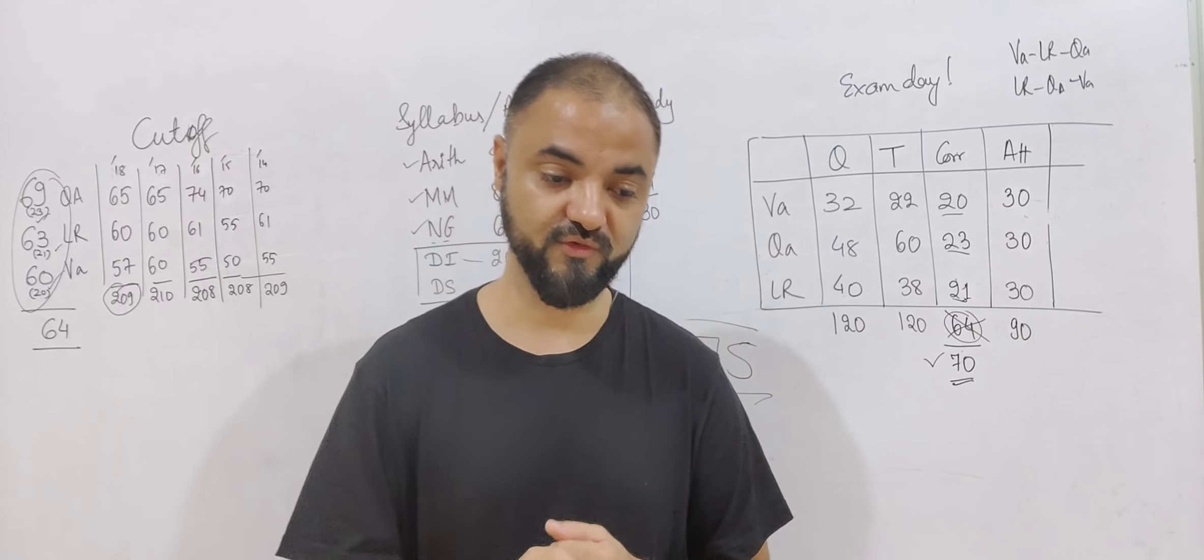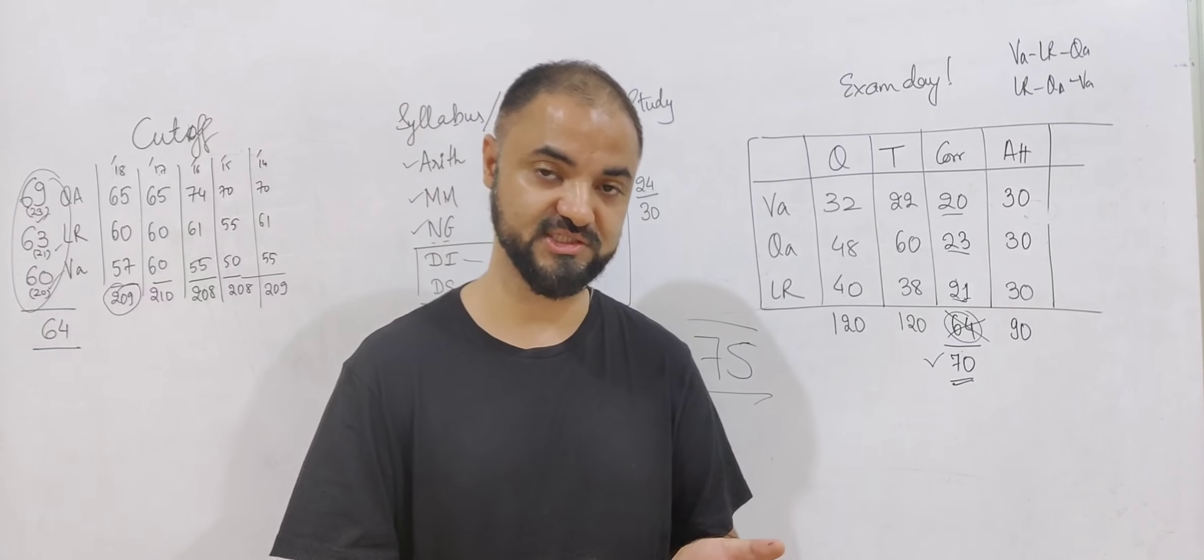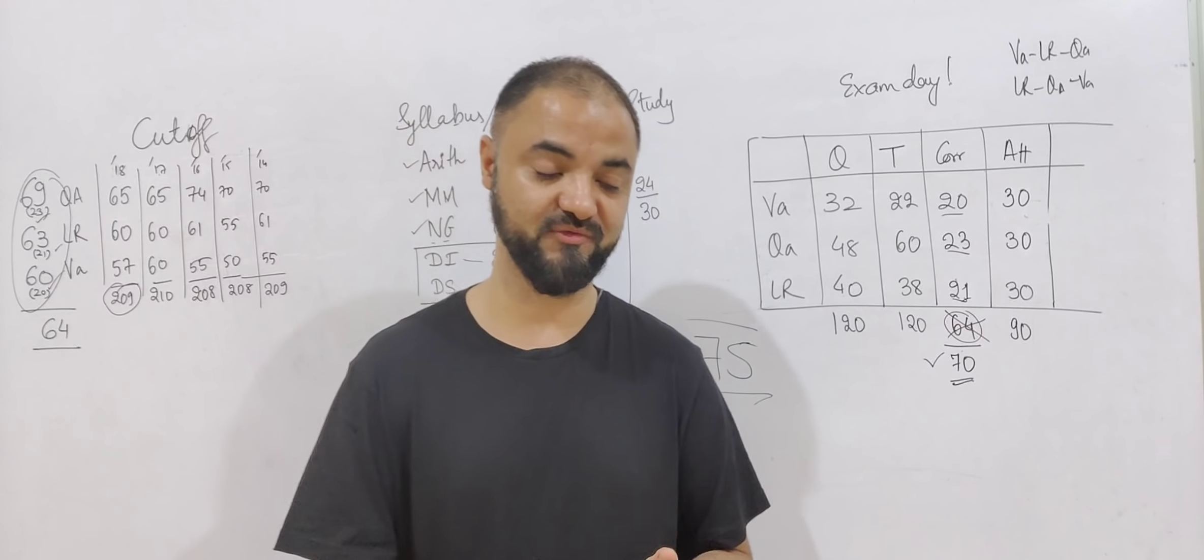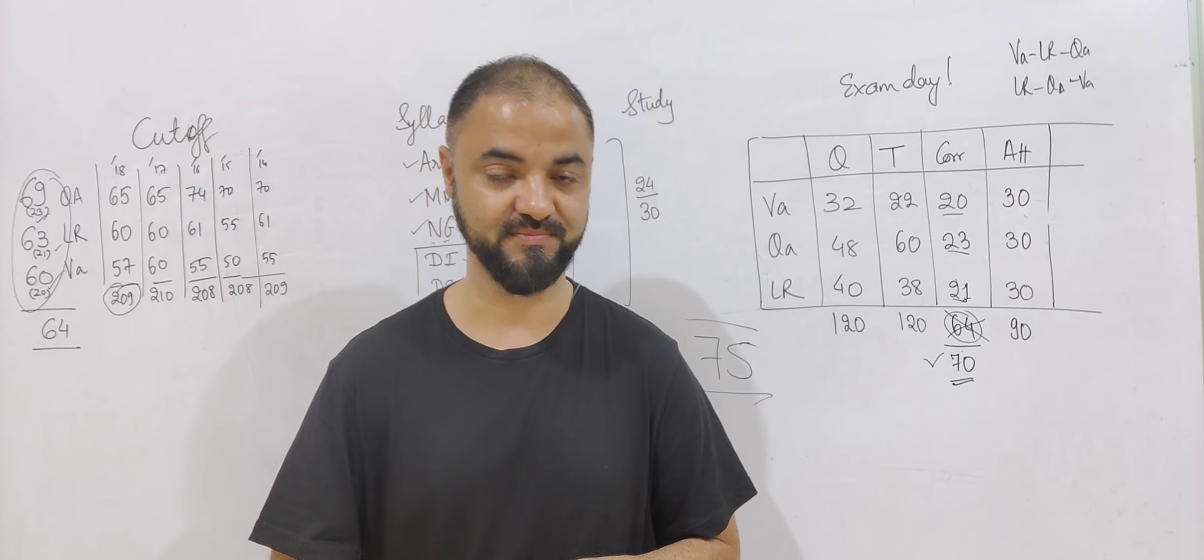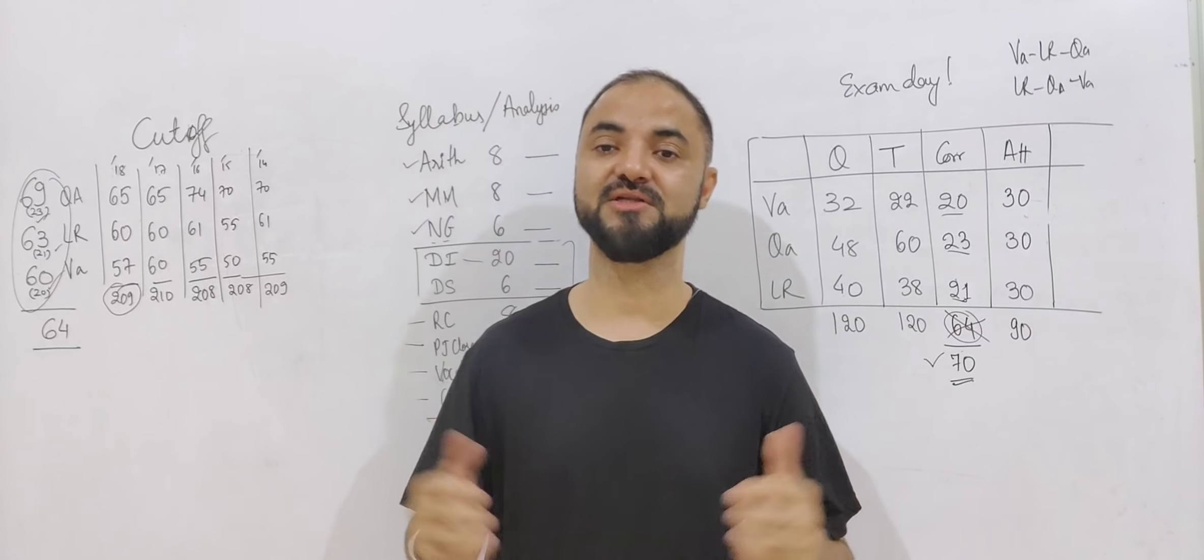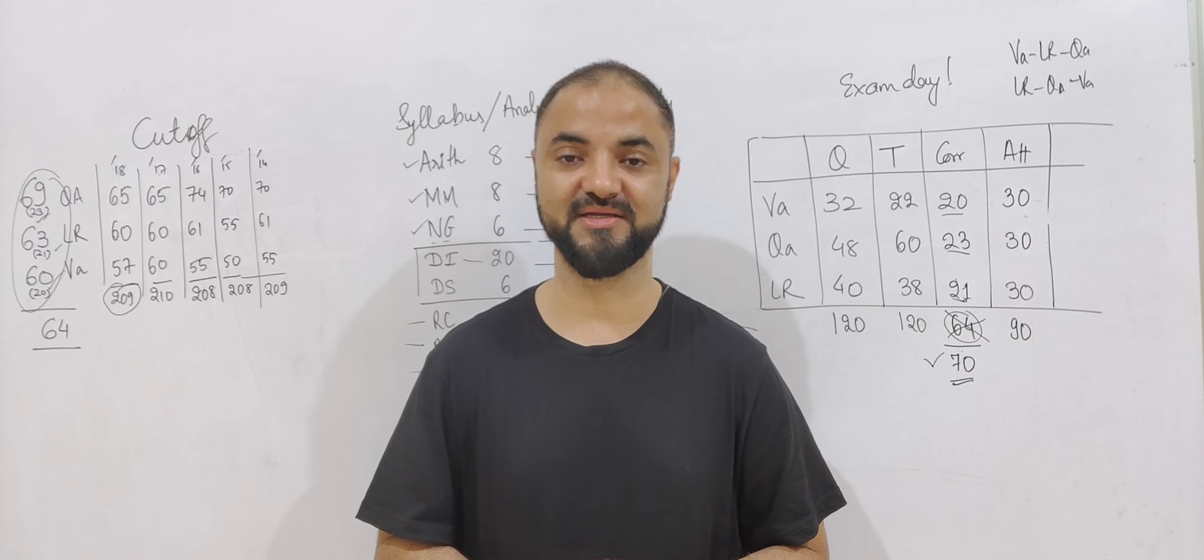I normally recommend to start with verbal because verbal is shorter. What people normally do is they start with the logic section. Verbal 22 minutes, there's a break in between, and then we complete with the quant section. That's how they do. But this is the overall strategy which I recommend for the NMAT exam.